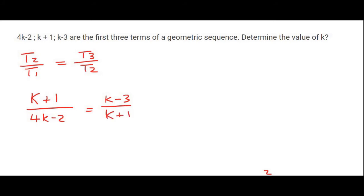What you now do in maths when you arrive at a situation like this is you cross multiply. So the k plus 1 would go up there and the 4k minus 2 would go up there. And so it would end up with k plus 1 and another k plus 1, and then on the right it would be k minus 3 and 4k minus 2.